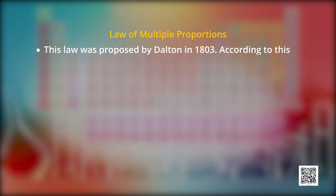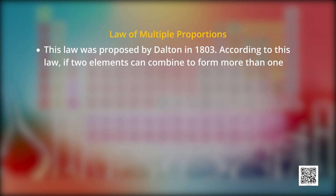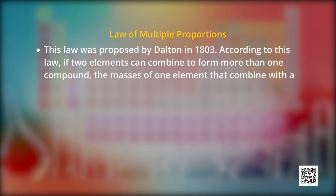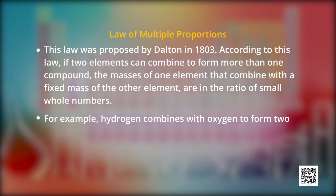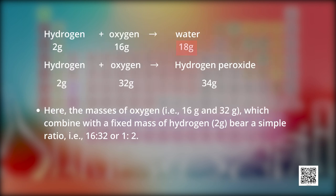The next law is the law of multiple proportions. It was proposed by Dalton in 1803. According to this law, if two elements can combine to form more than one compound, the masses of one element that combine with a fixed mass of the other element are in the ratio of small whole numbers. For example, hydrogen combines with oxygen to form two compounds — water and hydrogen peroxide. When 18 grams of water is formed, 2 grams of hydrogen combines with 16 grams of oxygen. When 34 grams of hydrogen peroxide is formed, 2 grams of hydrogen combines with 32 grams of oxygen. The masses of oxygen — 16 to 32 — are in the ratio 1:2.